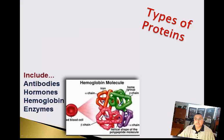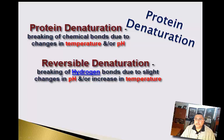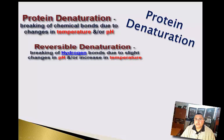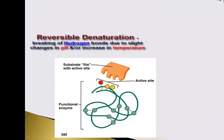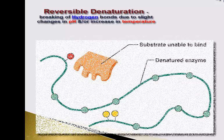Proteins can be denatured, and this denaturing can be reversible. Reversible denaturing means we've unfolded the protein due to some kind of change in the environment. There are two environmental agents that can cause denaturation of proteins in our body: pH and temperature. As you can see in the diagram, a functional protein with its active pocket will unfold when the pH changes or temperature increases, causing those hydrogen bonds to break so it's no longer active.